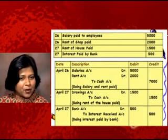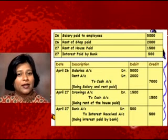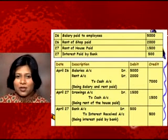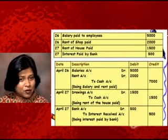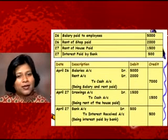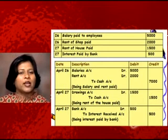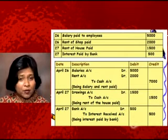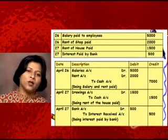Drawings is a personal expenditure. The rule for personal accounts states: debit the receiver, credit the giver. The person taking cash out of the business is receiving it, so Drawings Account is debited. Cash is going out, and as per the real account rule — credit what goes out — Cash Account is credited. The journal entry is: Drawings Account debit to Cash Account, ₹1500. Narration: being rent of house paid.